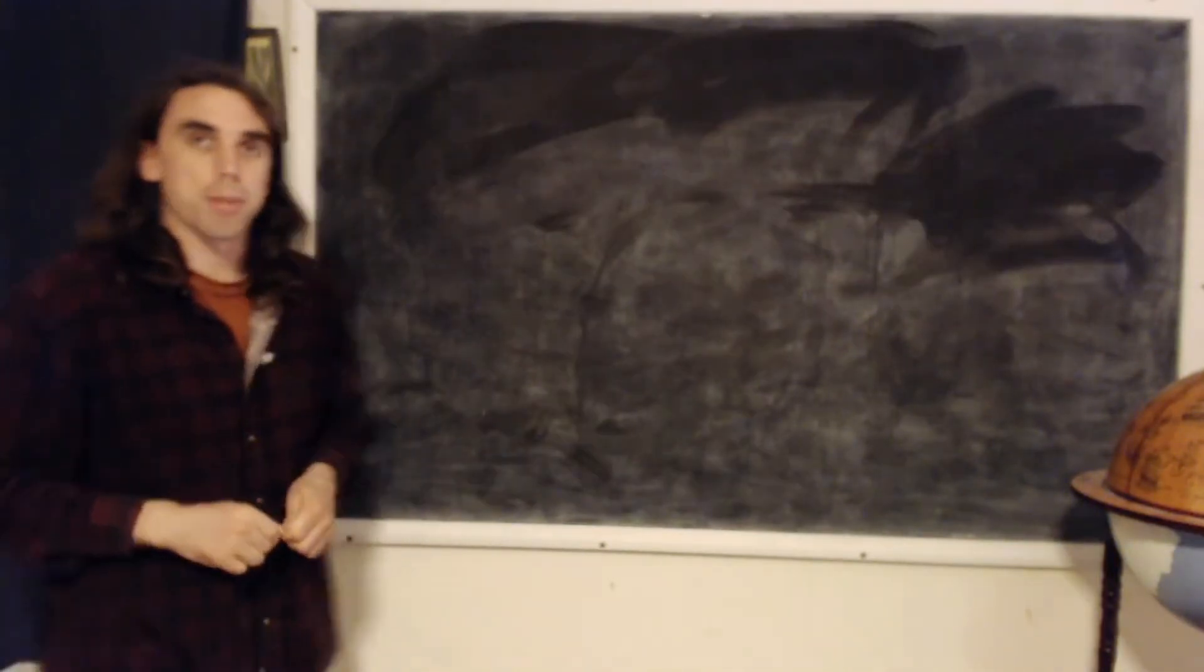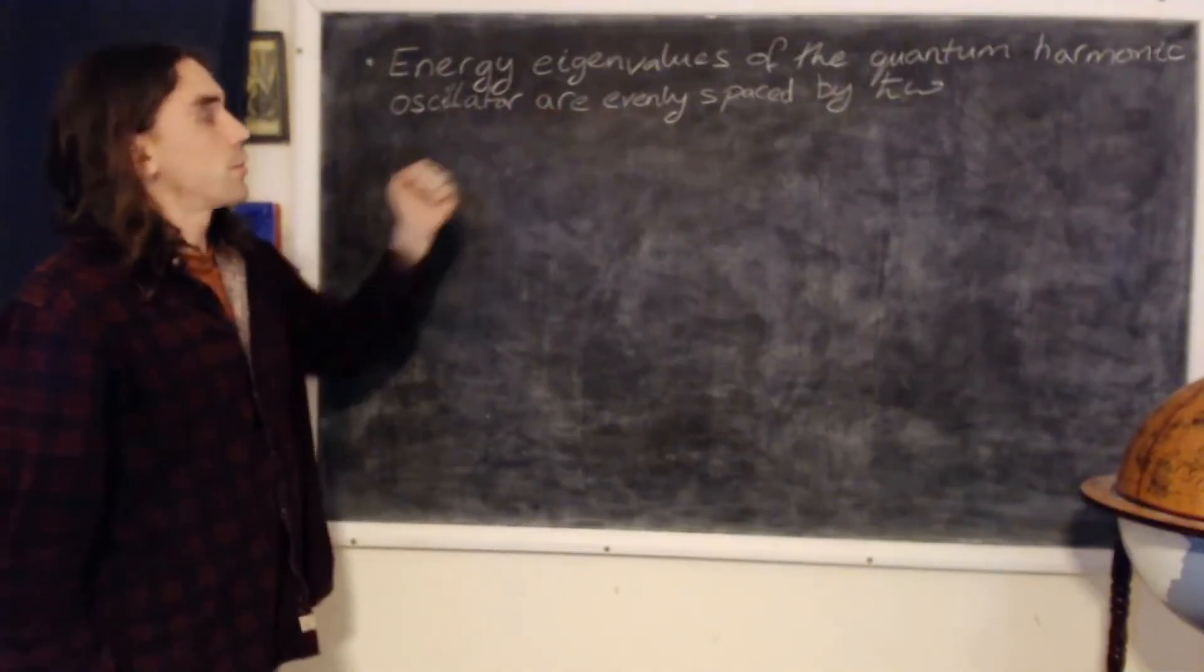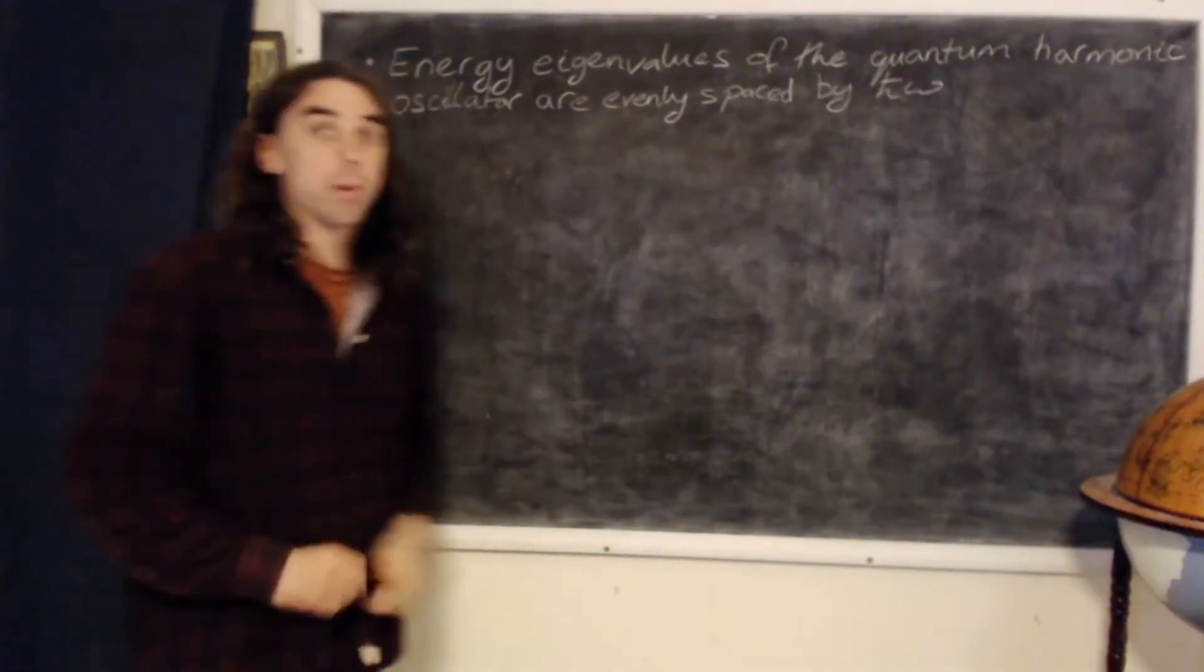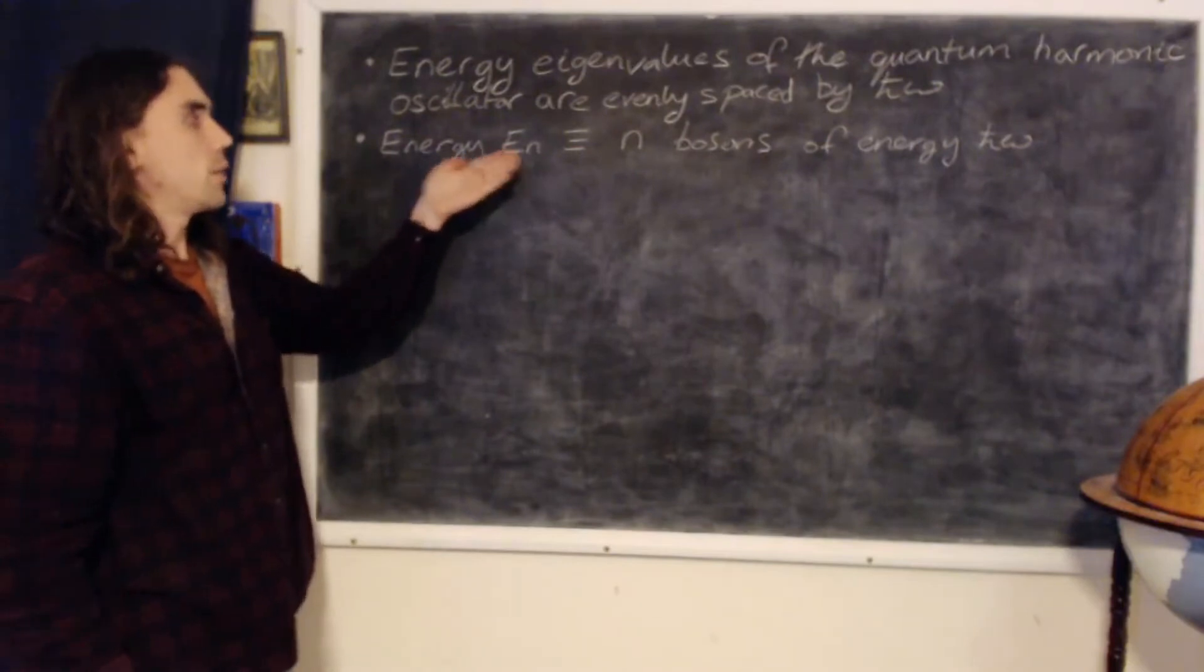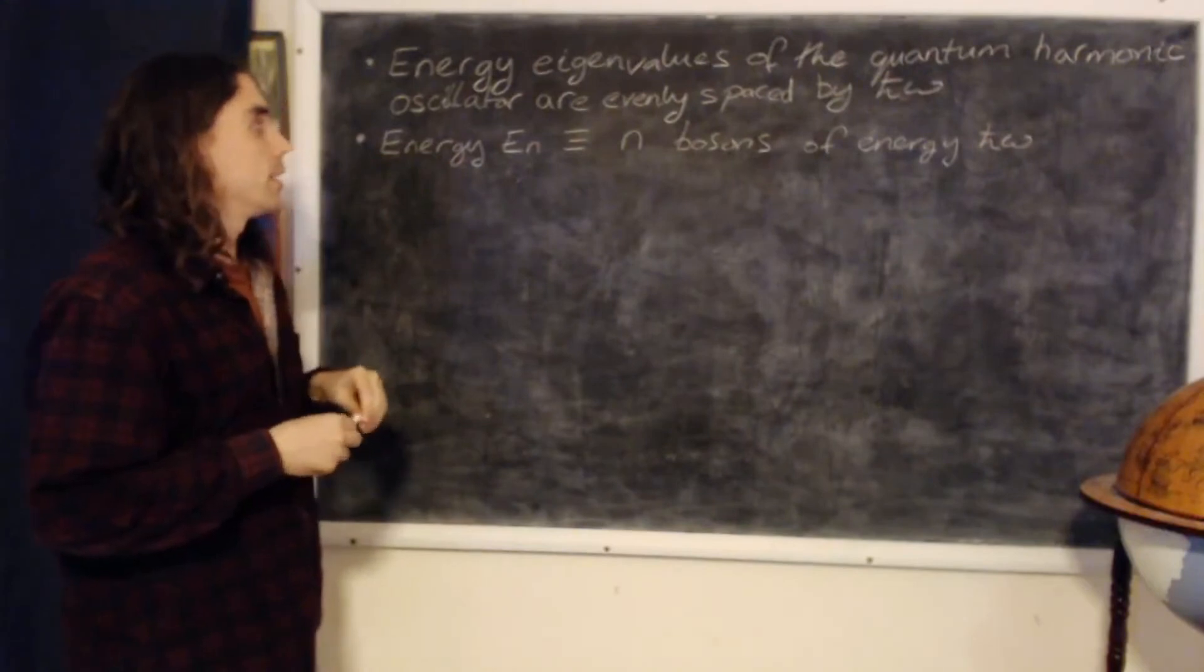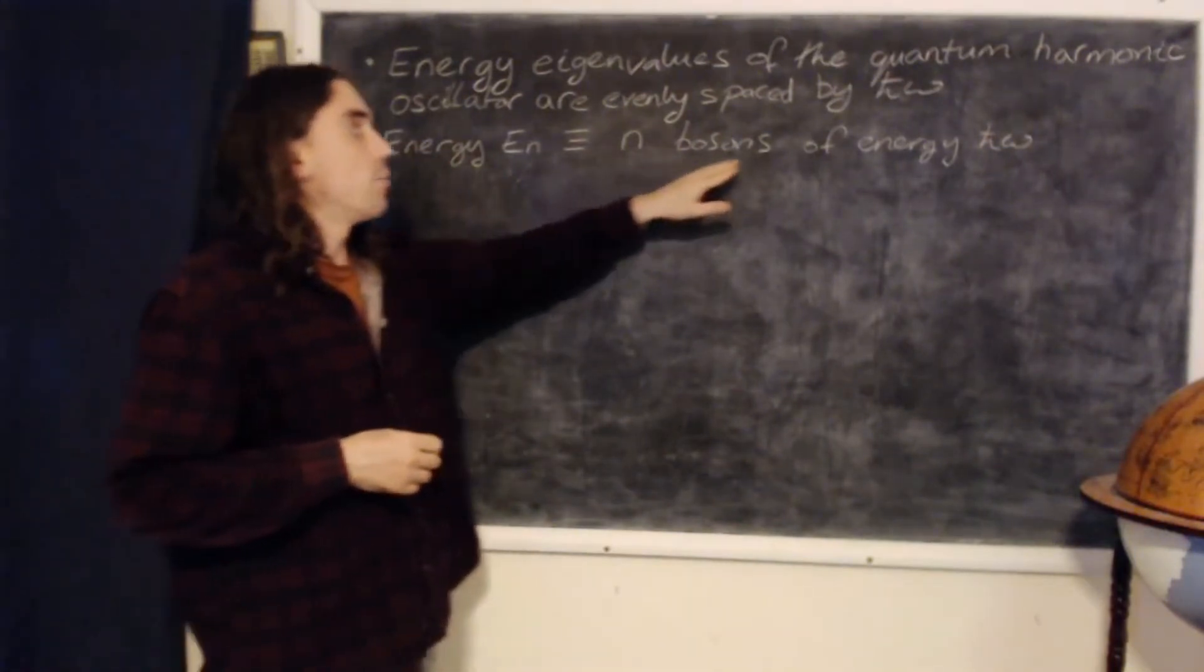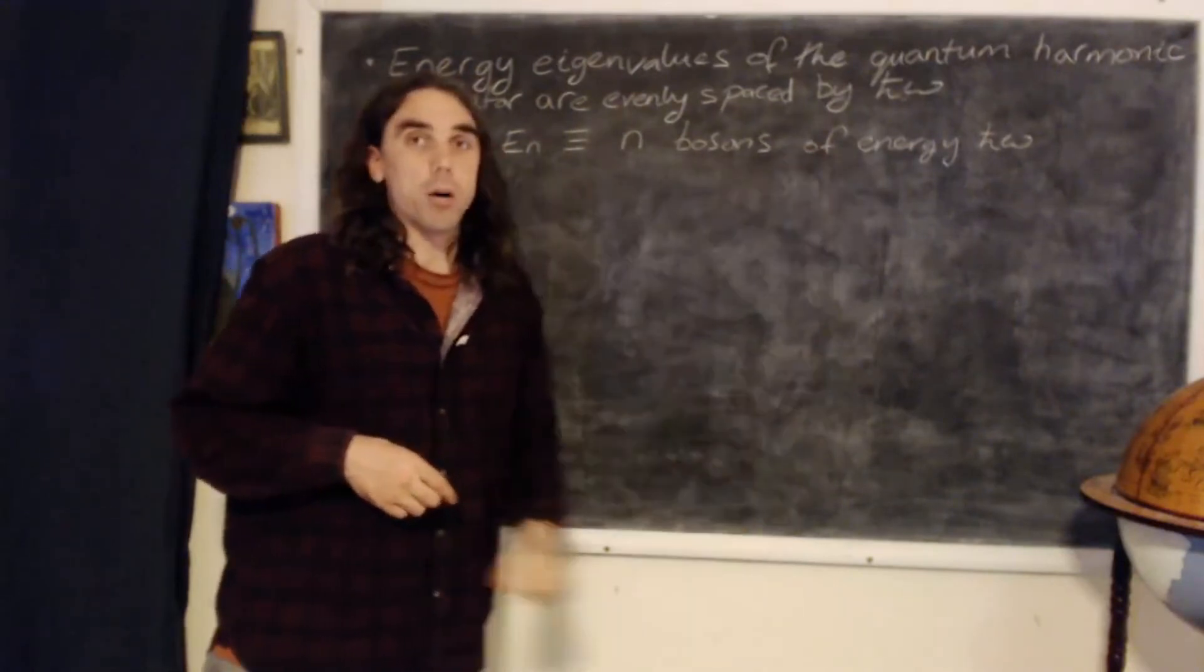Okay, so let's recap that in bullet points. The energy eigenvalues of the quantum harmonic oscillator are evenly spaced by energies h bar omega. When we have energy eigenvalue En, we can either think of that as the nth excited state within the harmonic oscillator, or we can think of it as n bosons, n independent bosons of energy h bar omega each.